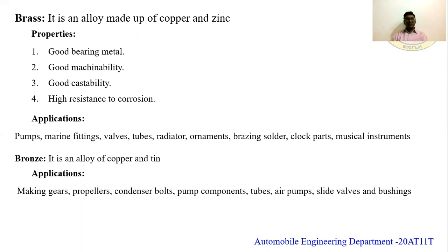Brass is an alloy made up of copper and zinc. Its properties include good bearing material, good machinability, good castability — meaning it can be made into any model — and high resistance to corrosion, meaning the material does not corrode easily. Brass is used in pumps, marine fittings, walls, tubes, radiators, ornaments, brazing solder, clock parts, and musical instruments.